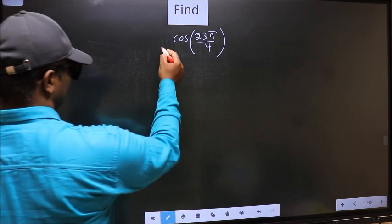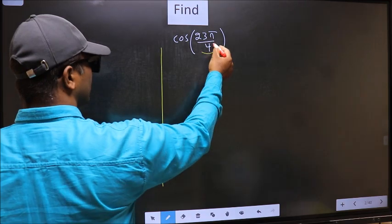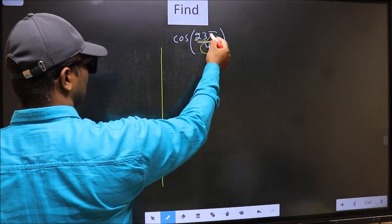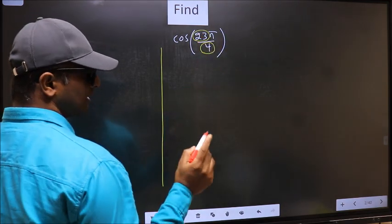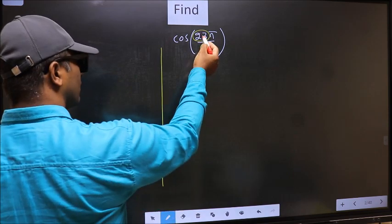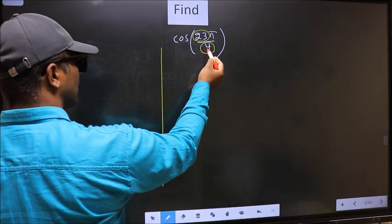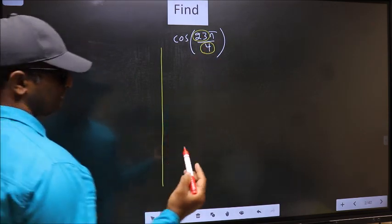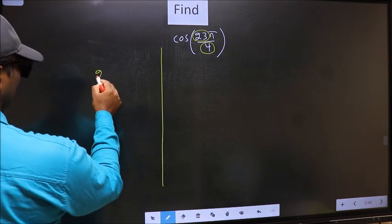In the denominator, we have 4. In the numerator, 23. Now you should check, 23 is close to which multiple of 4? What I mean is,